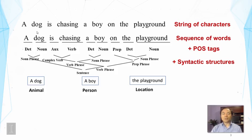If we go further for semantic analysis, we might be able to recognize a dog as an animal, a boy as a person, and playground as a location. We can further analyze their relations,